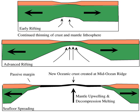A rifted margin is the typical way that passive margins form, as separated continental tracts move perpendicular to the coastline. This is how the Central Atlantic opened, beginning in Jurassic time. Faulting tends to be listric — normal faults that flatten with depth.